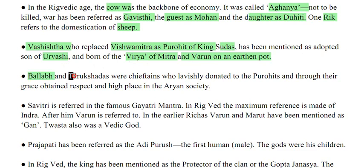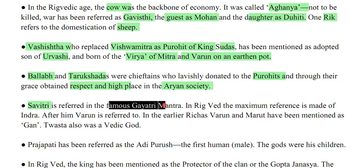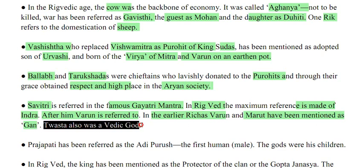Ballab and Taruk Shahdaz were chieftains who lavishly donated to the Purohit and through their grace obtained respect and high place in Aryan society. Savitri is referred to in the famous Gayatri Mantra. In Rigveda, the maximum reference is made of Indra; after him, Varun is referred. Varun and Marut have been mentioned as Gana. Tvast also was a Vedic god.